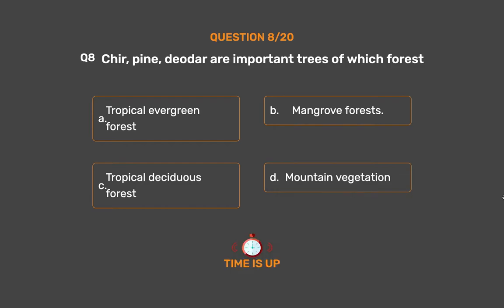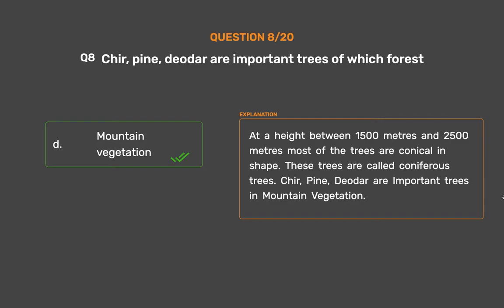The correct answer is Option D: Mountain vegetation. At a height between 1500 and 2500 metres, most trees are conical in shape and are called coniferous trees. Chir, pine, and deodar are important trees in mountain vegetation.